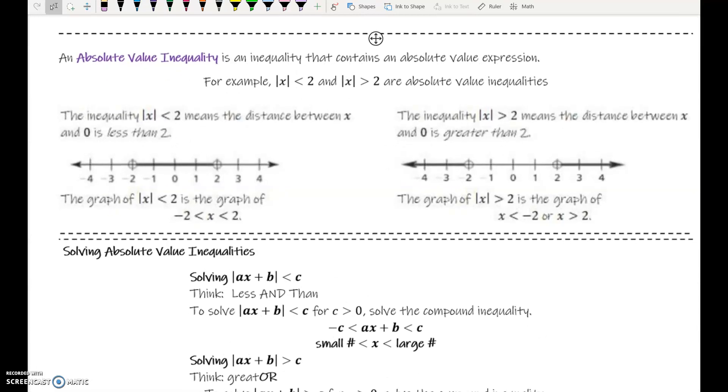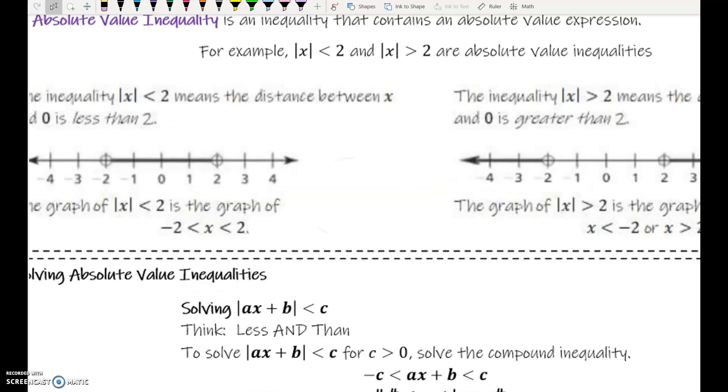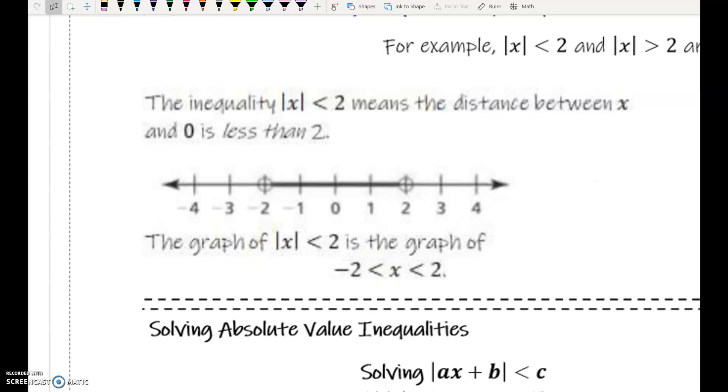If the absolute value of x is less than 2, I'm looking at this piece over here on the left. That means whatever x is, it needs to be between 0 and 2. It needs to be something with a distance of less than 2. Imagine that my head is 0. X needs to be within 2 units away from my head.